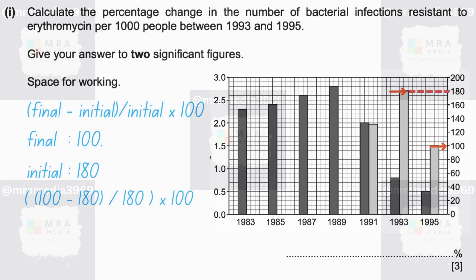Plugging this into the calculator: 100 minus 180 divided by 180, multiplied by 100. That gives negative 80 divided by 180, multiplied by 100, which equals minus 44.444%, which is negative 44% to two significant figures.